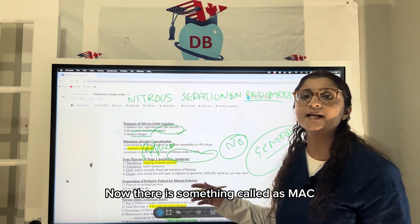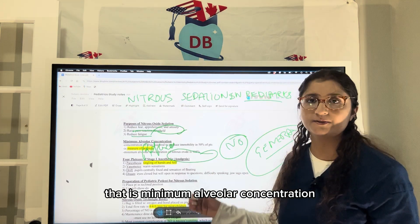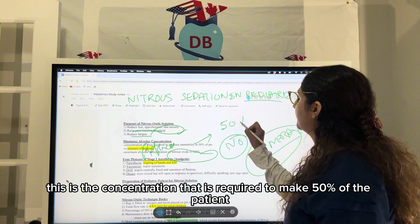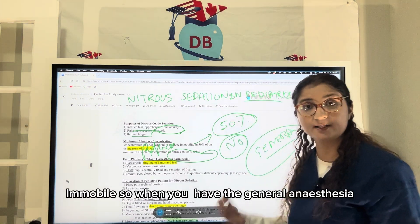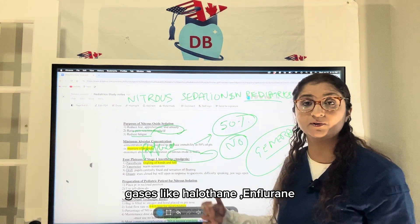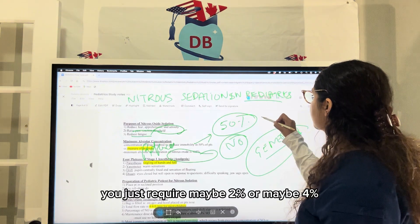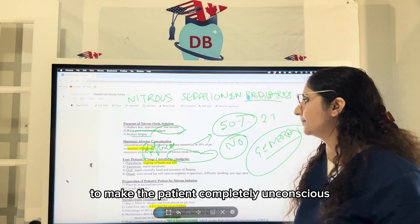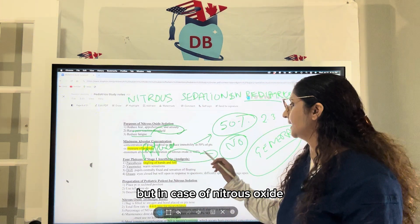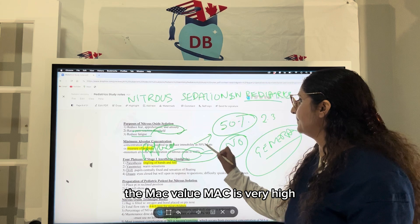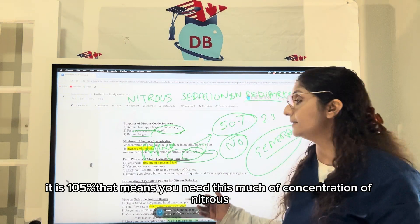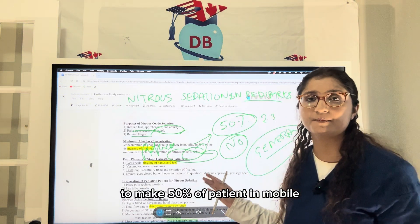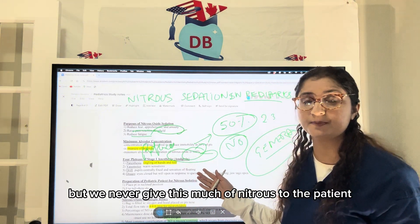There is a concept called MAC — Minimum Alveolar Concentration — which is the concentration required to make 50% of patients immobile. General anesthetic gases like halothane and fluorine are very potent, requiring only around 2–4% to make a patient completely unconscious. But the MAC value for nitrous oxide is very high at 105%, meaning you would need that concentration to make 50% of patients immobile.